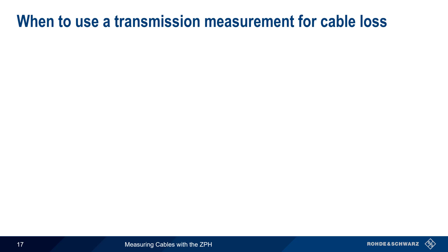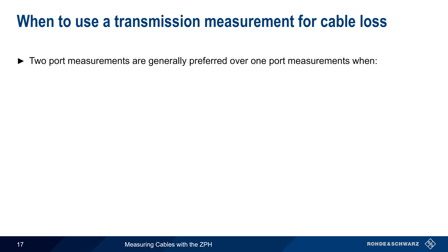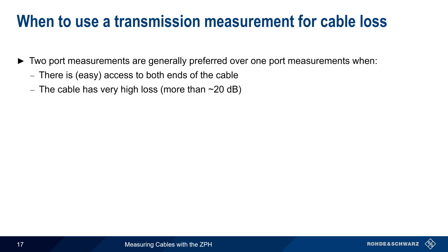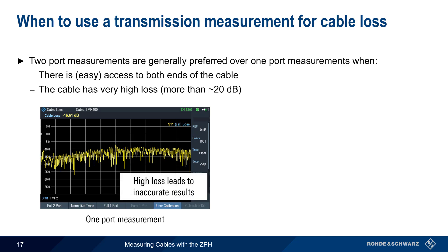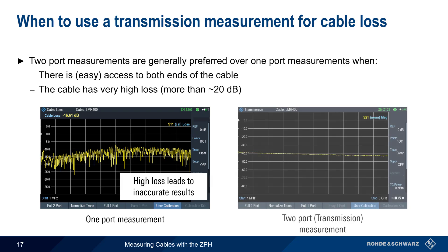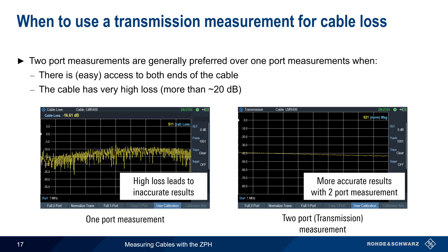Two-port measurements are generally preferred over one-port measurements in two cases. The first is where there is easy access to both ends of the cable, and the second is when the cable has very high loss – more than about 20 dB. High levels of loss tend to produce less accurate one-port measurements. In this one-port trace, we see significant attenuation, and therefore the one-port measurement results should be viewed with caution. Making a two-port measurement of the same cable provides a much more accurate and repeatable test result.